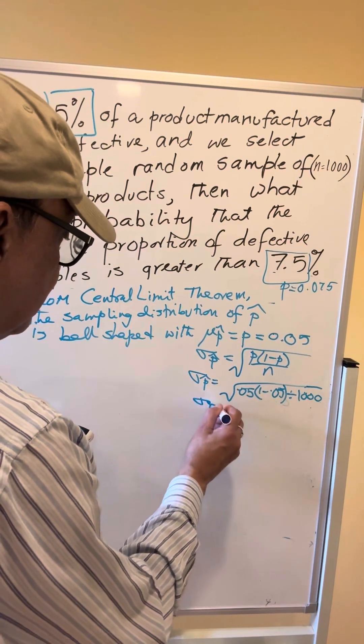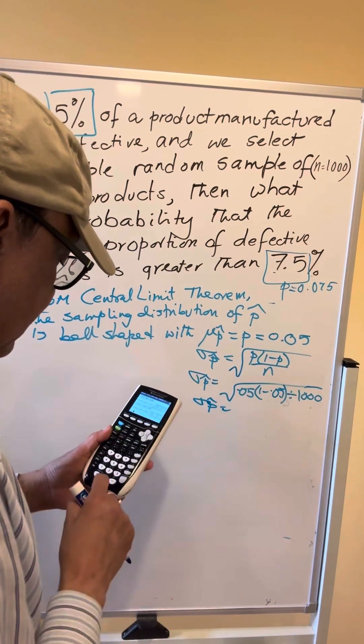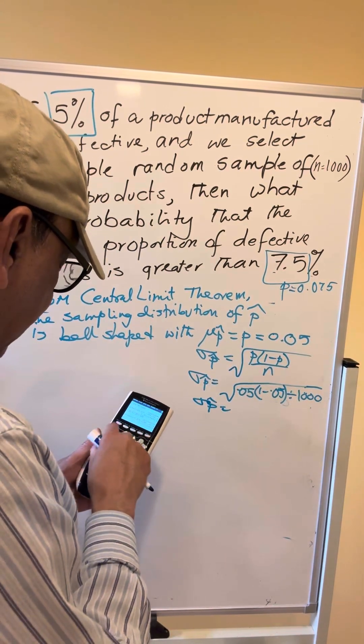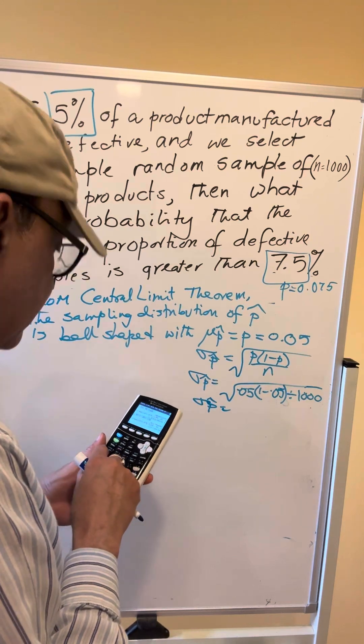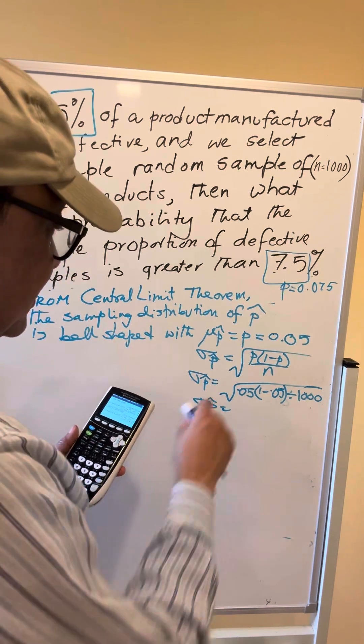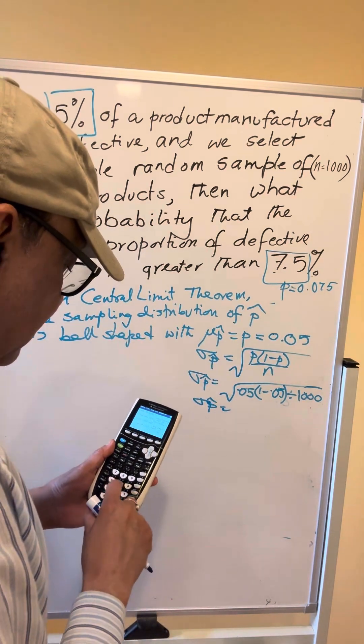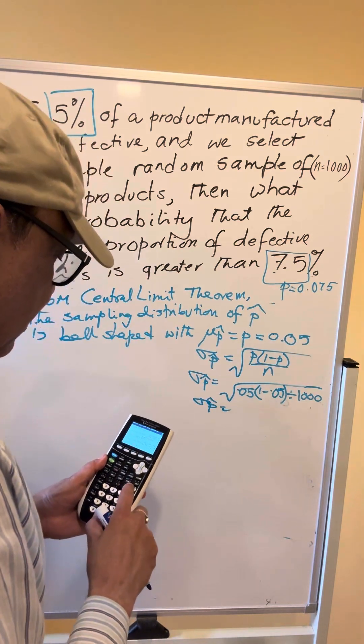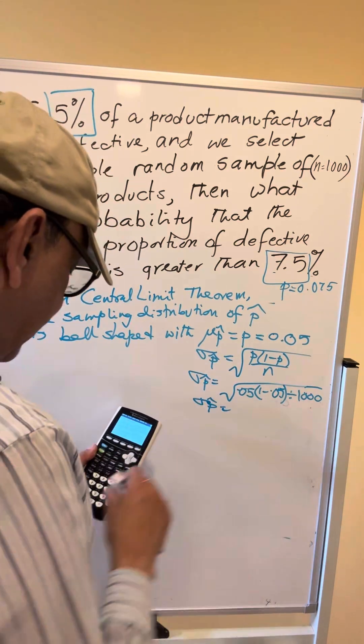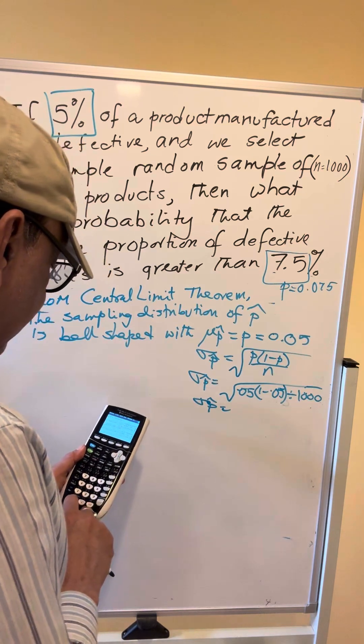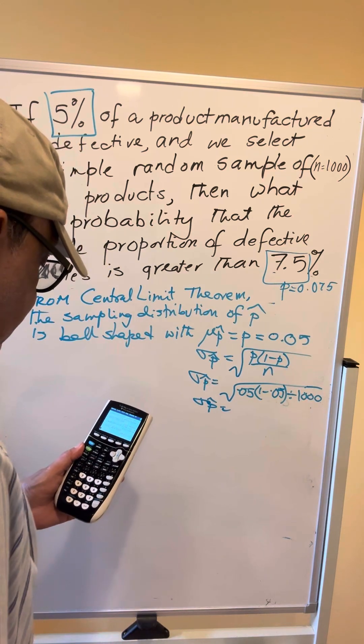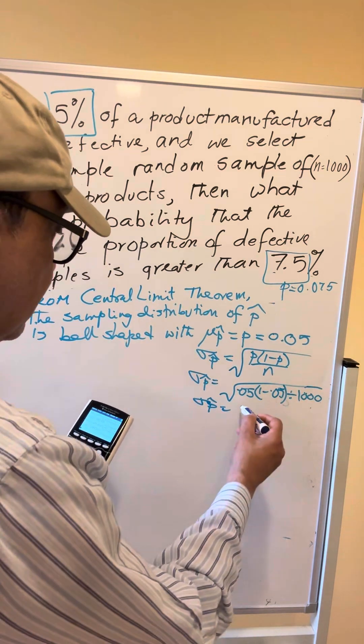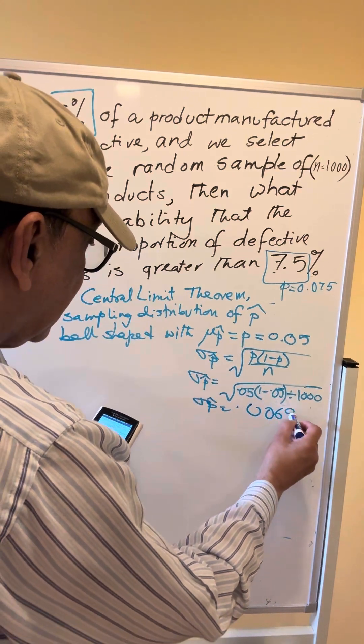So let's quickly use our calculator and do this calculation for sigma P-hat. That is equal to 2nd x square, give me the square root, then 0.05 left parenthesis 1 minus 0.05, right parenthesis divided by sample size of 1000 and that is equal to 0.0069.